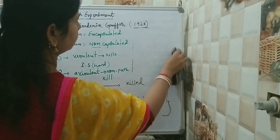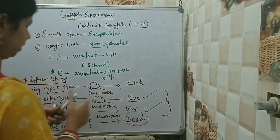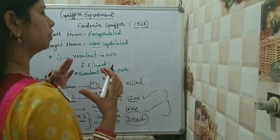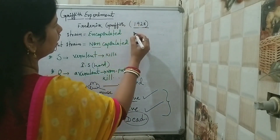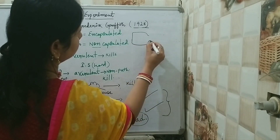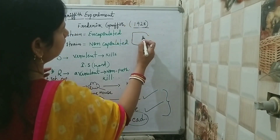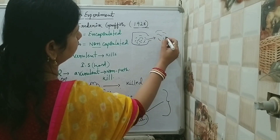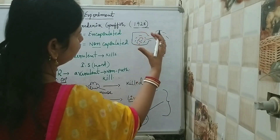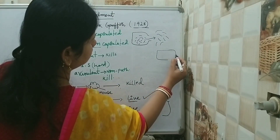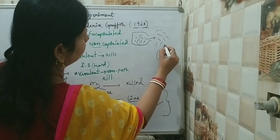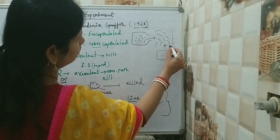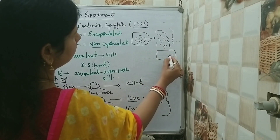The explanation is related to transformation. Whenever a bacterium dies or is killed, its DNA gets fragmented and released outside, becoming free. When another bacterium comes in contact with this free DNA, the DNA is able to be transferred inside that bacterium. This process is called transformation.